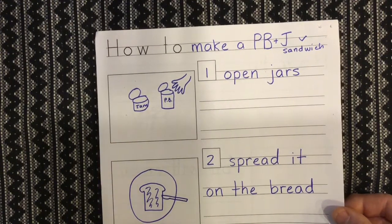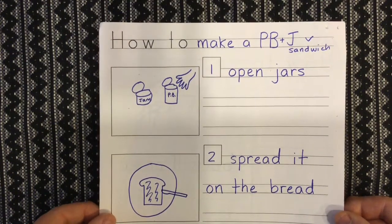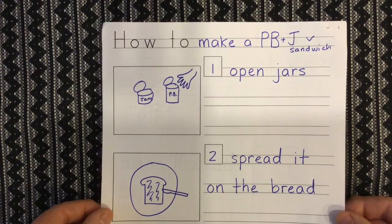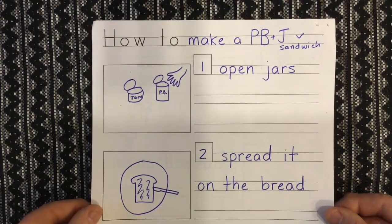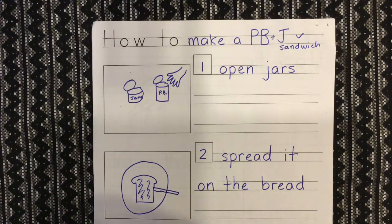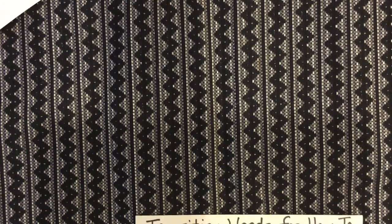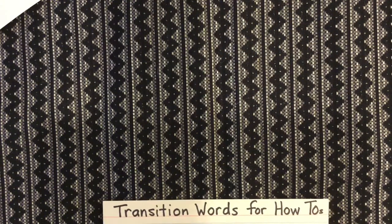So today we're going to go back and review and reread our how-to so far and think about two things. We're going to think about how we can make them more clear — have we added enough details — and we're going to learn especially how to add something to our instructions that are called transition words.